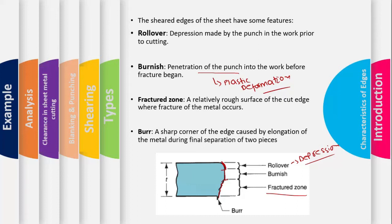After the burnishing zone, there is a relatively rough surface called the fractured zone, caused by the rapid breaking of bonds between atoms as the crack propagates. Finally, there is a burr — a sharp edge caused by elongation of the metal during the final separation of the two pieces, similar to how pulling bubble gum apart leaves elongated edges. Burr formation depends on several parameters.